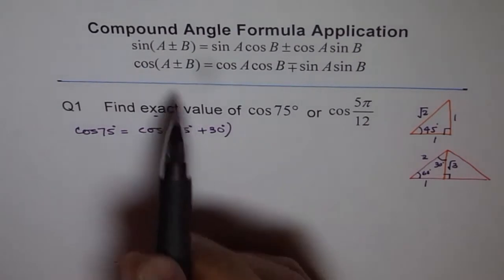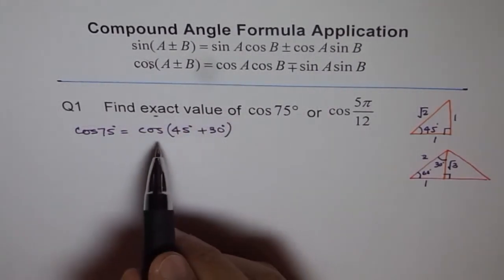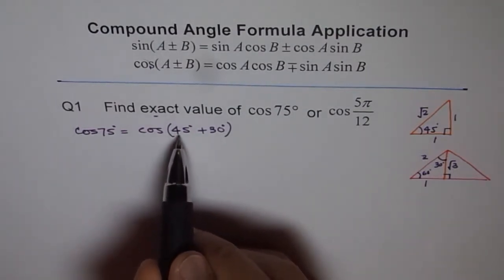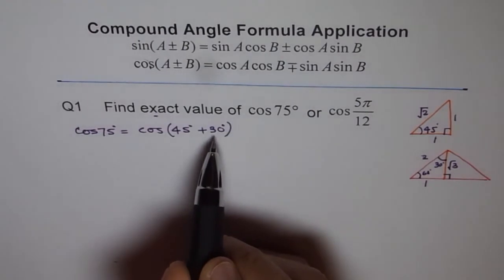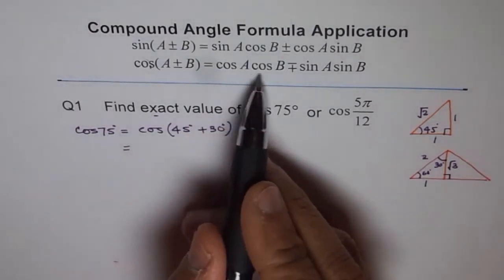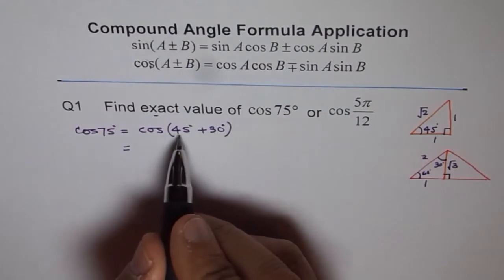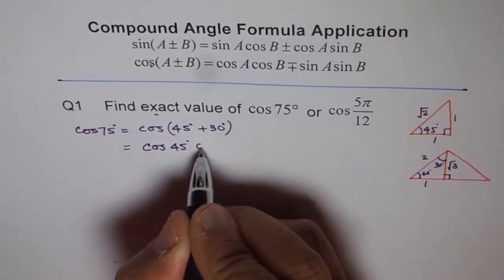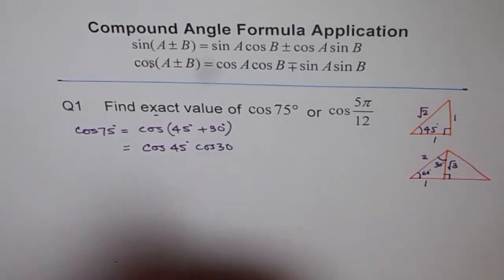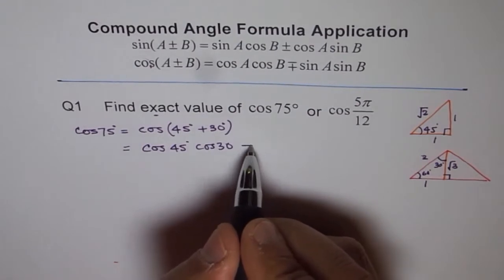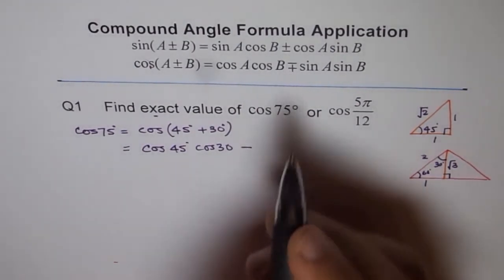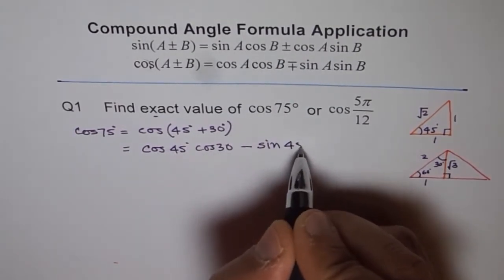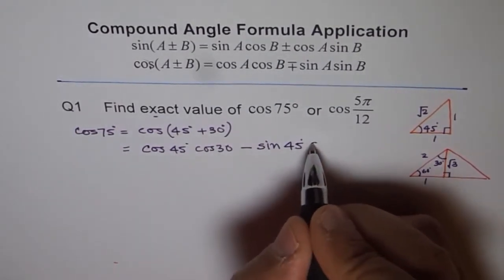Now, we can use this compound angle formula to expand cos(45° + 30°). Now, here, A is 45° and B is 30°. So, when we say cos A cos B, it means cos 45° and cos 30°, correct? So, let me write that. Cos of 45 degrees and cos of 30 degrees. Remember, if it is plus here, we have to take minus. That is the top sign. And then, sin A sin B. Sin of A is 45° and B is 30°, sin of 30 degrees.